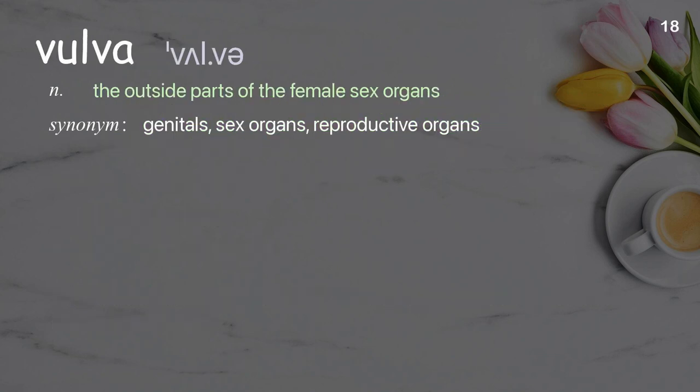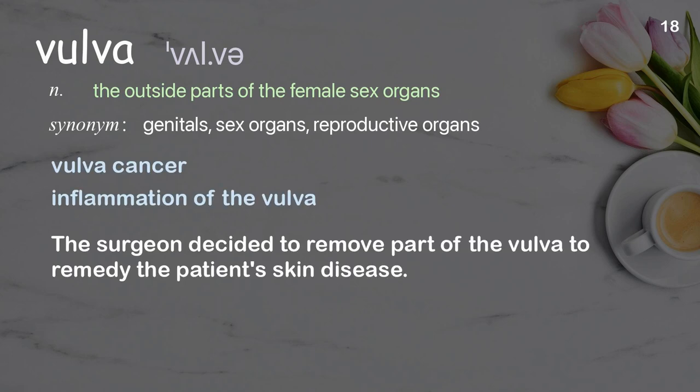Vulva: the outside parts of the female sex organs. Examples: Inflammation of the vulva. The surgeon decided to remove part of the vulva to remedy the patient's skin disease.